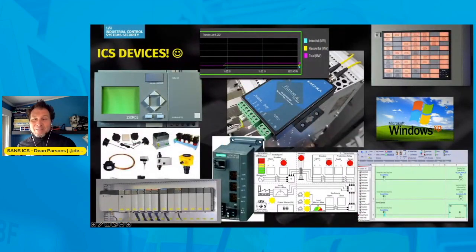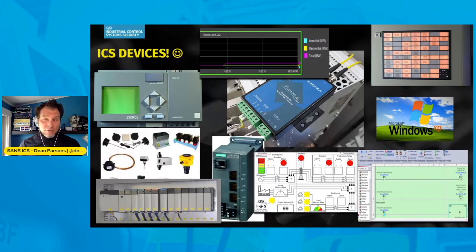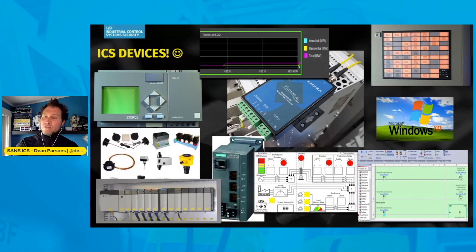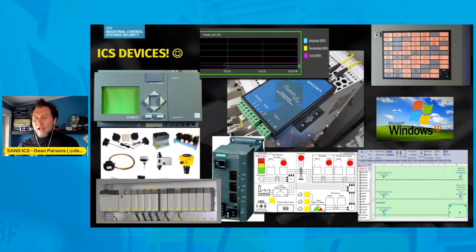Here are some ICS devices, which can be anything from embedded controllers, IEDs — intelligent electronic devices — alarm servers, Windows OT devices, engineering workstations, PLCs, RTUs, and even serial devices as well. The idea is to use the Purdue model to logically represent them in a more structured way and figure out how we can add security as we logically represent this in a more approved architecture for today's standards.